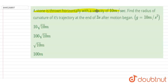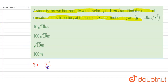Hello everyone. A stone is thrown horizontally with a velocity of 10 meters per second. The radius of curvature of its trajectory at the end of three seconds of motion is to be found. The radius of curvature is given by v² divided by a_perpendicular, where a_perpendicular is the component of acceleration perpendicular to the velocity.